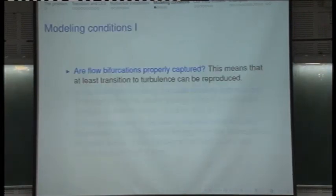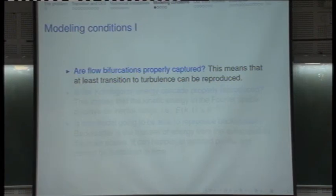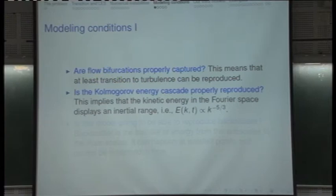There are several questions that determine whether you are able to model turbulence or not. The first is: are flow bifurcations properly captured? The different stages of the flow come from different flow bifurcations — Hopf bifurcations — that happen at a certain Reynolds number. It is very important to see whether you are able to capture that Reynolds number at which bifurcation takes place. That means that at least transition can be reproduced, maybe not fully developed turbulent flow, but at least transition. This is the most important one.